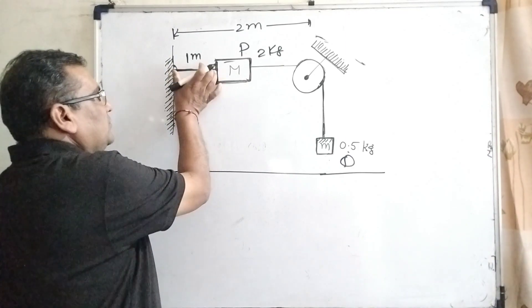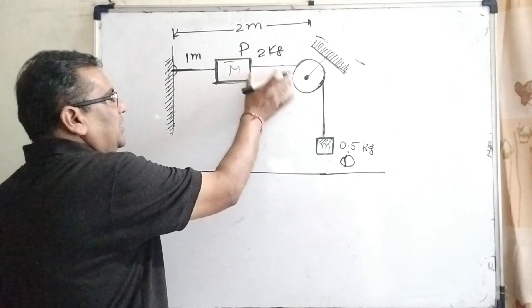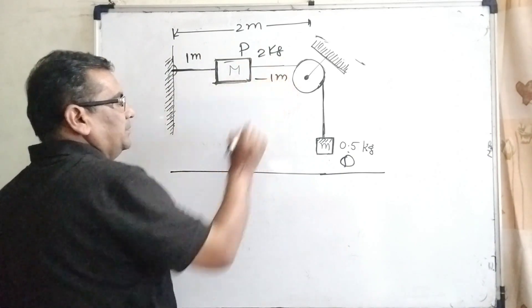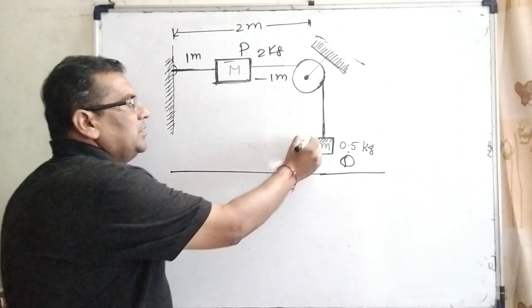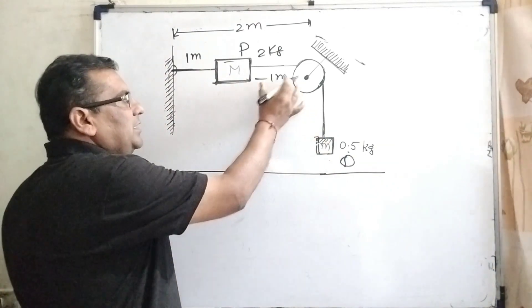Here the distance is 1 meter, and the total distance from the pulley is 2 meters, so the remaining distance is 1 meter. When it is held and then released,